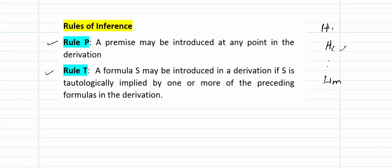If you think the second premise will be of more use or will lead you more easily to the conclusion, or if you find that H2 and H3 have a link between them that helps crack the problem more easily than starting with clue number one, then you may do so — premises may be introduced at any point of time in the derivation. The rule for introducing the premise is referred to as Rule P.